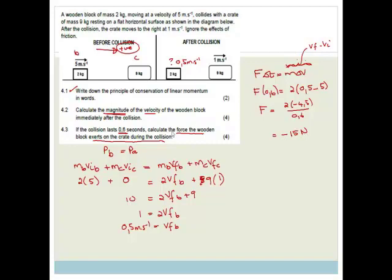It says calculate the force the wooden block exerts on the crate during this collision. But the crate is travelling forwards every time. So this is not negative 15. It's actually 15 newtons. Because remember, the minus just gives you direction. So it's 15 newtons to the right.